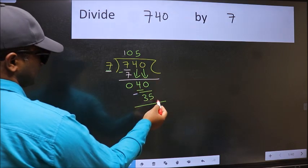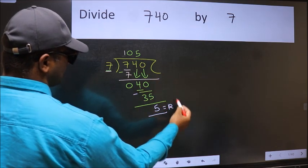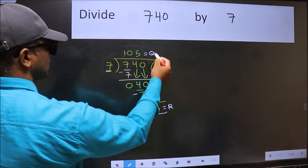No more numbers to bring down. So we stop here. This is our remainder and this is our quotient.